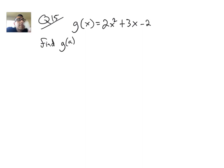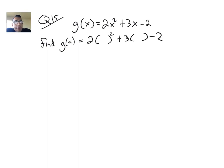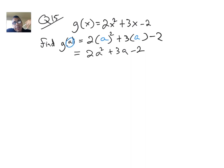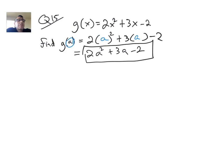So what that's telling us is that wherever you see an x, you're plugging in this a value. Once again, I'm going to rewrite my function, but wherever I see an x, I'm putting a parentheses because something's going inside. What's going inside the parentheses this time? That a value. So I'll put the a right here and the a right here. If I simplify this, there's not much we can do — so this just turns into 2a squared plus 3a minus 2. These are not like terms, so I cannot simplify that anymore. So there's my final answer.